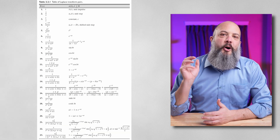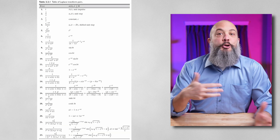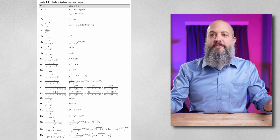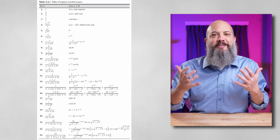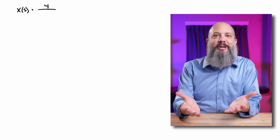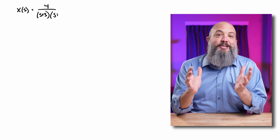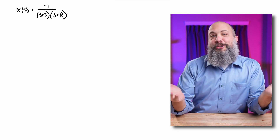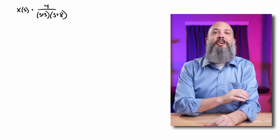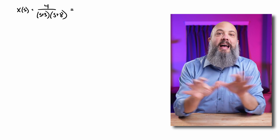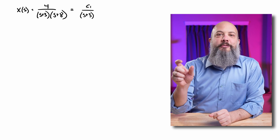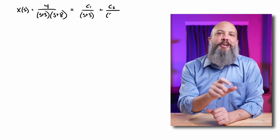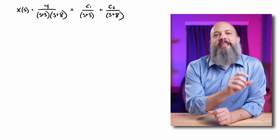I'm going to work through all three of these example problems, including using the Laplace transform tables to solve for a final answer x of t. The first step to partial fraction decomposition is to figure out what your fractions are going to be. When the factoring is already done in the denominator, that's straightforward — you just split them up. So four divided by this denominator is going to split into a coefficient over s plus three and a coefficient over s plus eight.